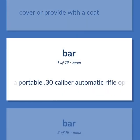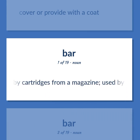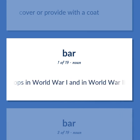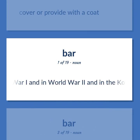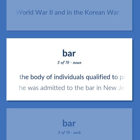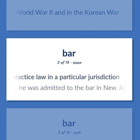A portable .30 caliber automatic rifle operated by gas pressure and fed by cartridges from a magazine, used by United States troops in World War I, World War II, and the Korean War. The body of individuals qualified to practice law in a particular jurisdiction — he was admitted to the bar in New Jersey.